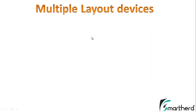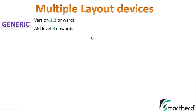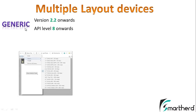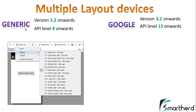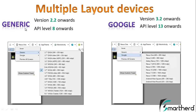Now, how do you make layouts for multiple devices? Your Eclipse IDE shows there are two types of devices: generic devices and Google devices. Generic devices have version 2.2 onwards — starting from Froyo and ending at the latest version.